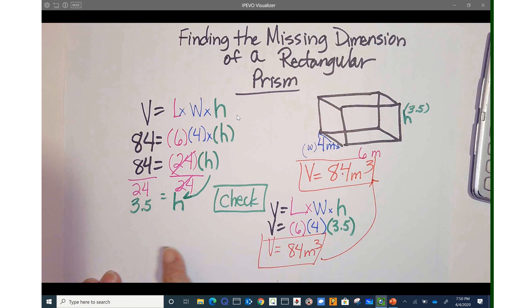That is how you find the missing dimension of a rectangular prism.